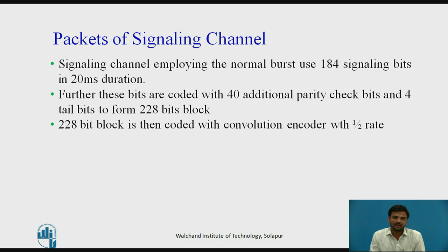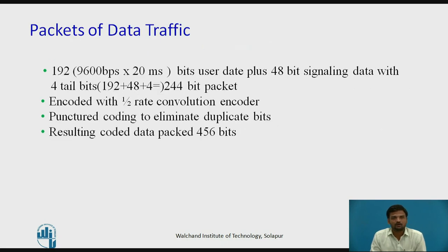Next step is packets of signaling channels. Signaling channels employing the normal burst use 184 signaling bits in 20ms duration. These bits are coded with 40 additional parity check bits and 4 tail bits to form a 228-bit block, then coded with a half-rate convolution encoder. Data traffic packets consist of 192 bits user data plus 48-bit signaling data with 4 tail bits, resulting in a 244-bit packet, encoded with half-rate convolution and punctured coding, producing a 456-bit coded data packet.